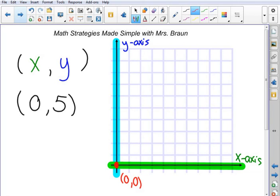1, 2, 3, 4, 5. So the point (0, 5) would be right there on the y-axis.